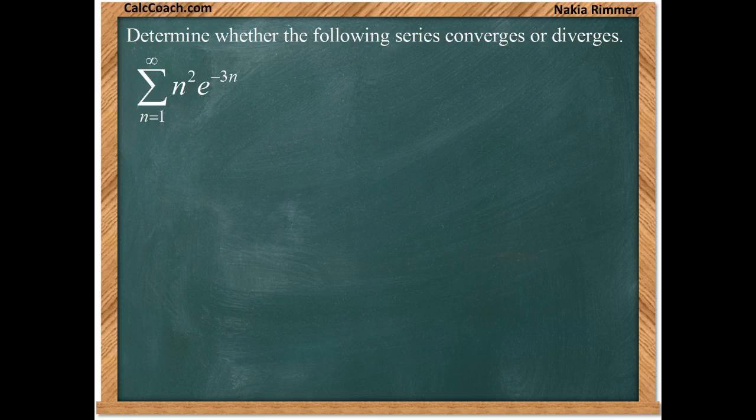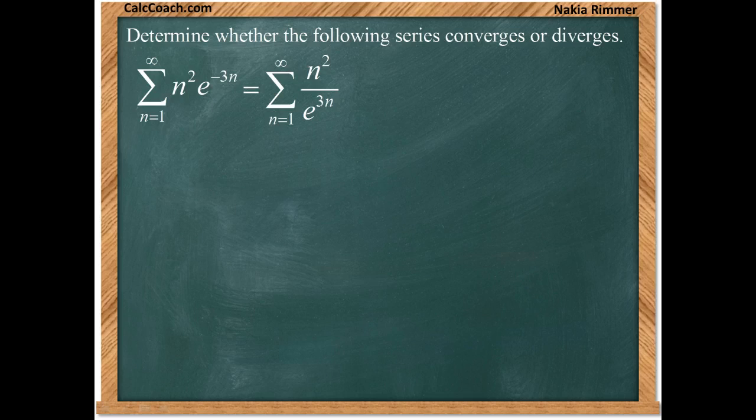It's helpful when you have fractions, and this one doesn't, but it can be written as a fraction. This negative exponent on the exponential term can be written in the denominator with a positive exponent. So we have n squared over e to the 3n.